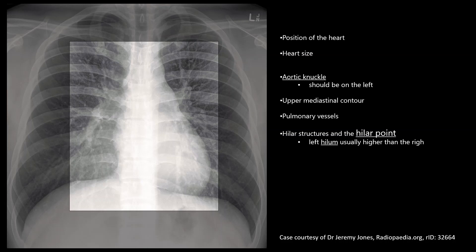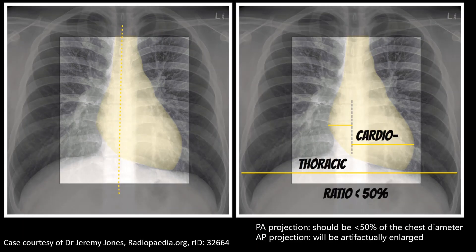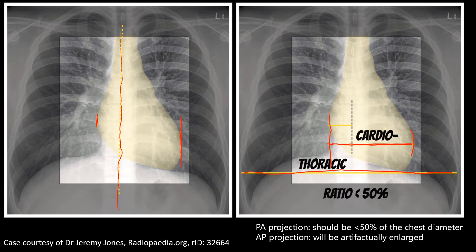For circulation, appreciate the position of the heart, size of the heart, aortic arch, upper mediastinal contour, pulmonary vessels, and hilar structures. Draw an imaginary midline through the vertebral column, take the farthest points on the right and left borders of the heart, and measure the width. This width should be less than 50% of the breadth of the thoracic cavity in PA projection. In AP projection, the heart looks artifactually larger.